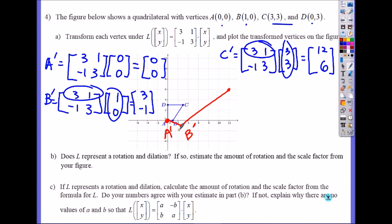What about the last one, D prime? It's again 3, negative 1, 1, 3. And 0 times 3, which is... 0 times 3 is 0. 3 times 1 is 3. 0 times negative 1 is 0. And you get 9. So it's at now, 3, 9.